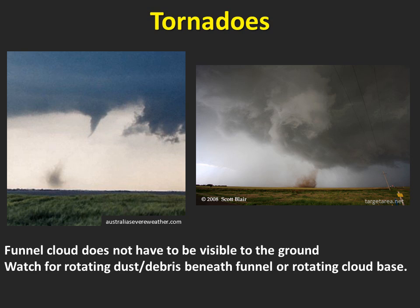It is not necessary for the condensation funnel to extend all the way to the ground. Sometimes your first clue that a tornado has formed is a swirl of dust and debris at the surface. If you see this, look above the swirl to see if it is associated with a funnel cloud or visible rotation on the underside of the thunderstorm. This is called cloud-based rotation.